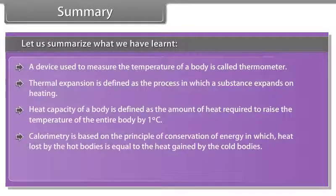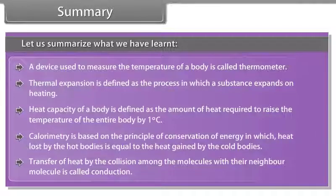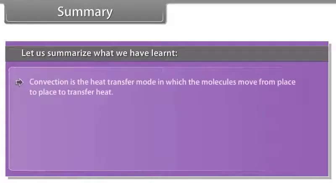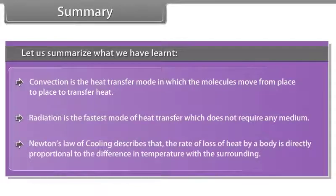Summary: Heat lost by hot bodies is equal to the heat gained by cold bodies. Transfer of heat by collision among molecules with their neighboring molecules is called conduction. Convection is the heat transfer mode in which molecules move from place to place to transfer heat. Radiation is the fastest mode of heat transfer and does not require any medium. Newton's Law of Cooling describes that the rate of loss of heat by a body is directly proportional to the difference in temperature with the surroundings.